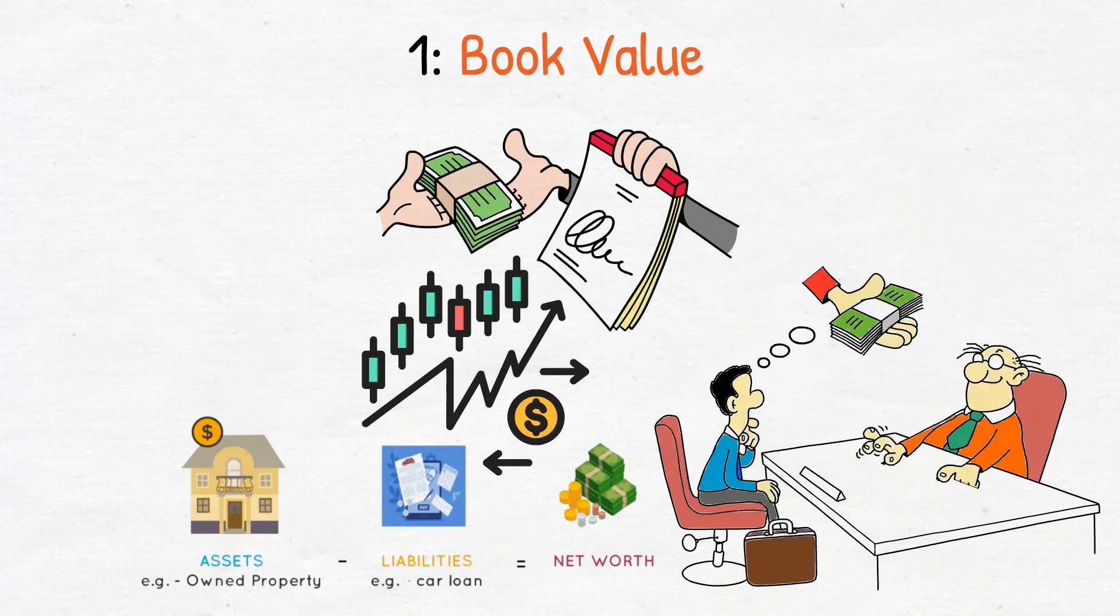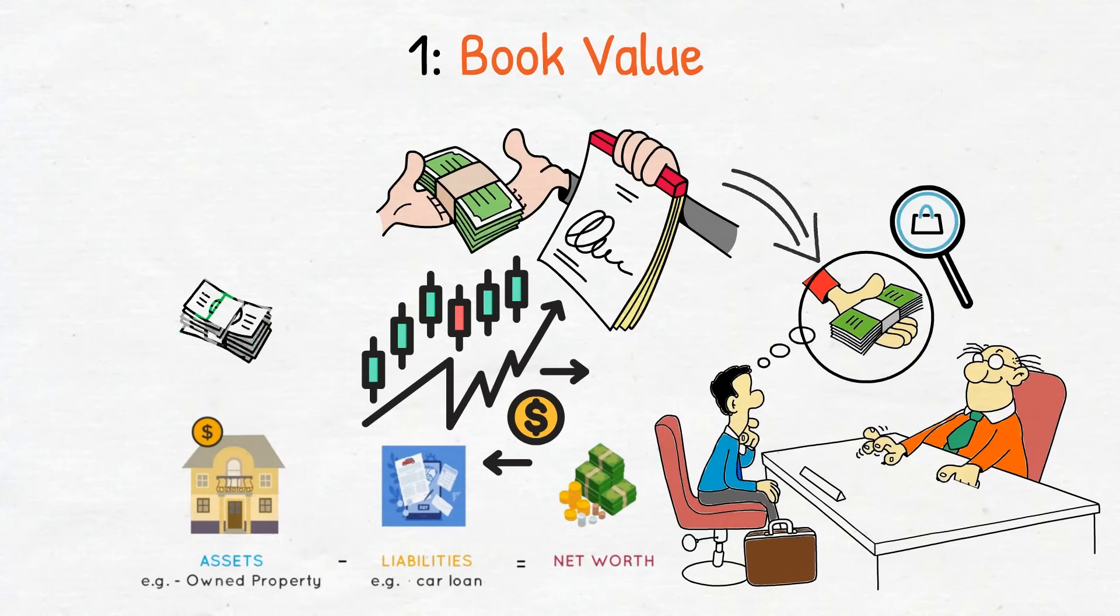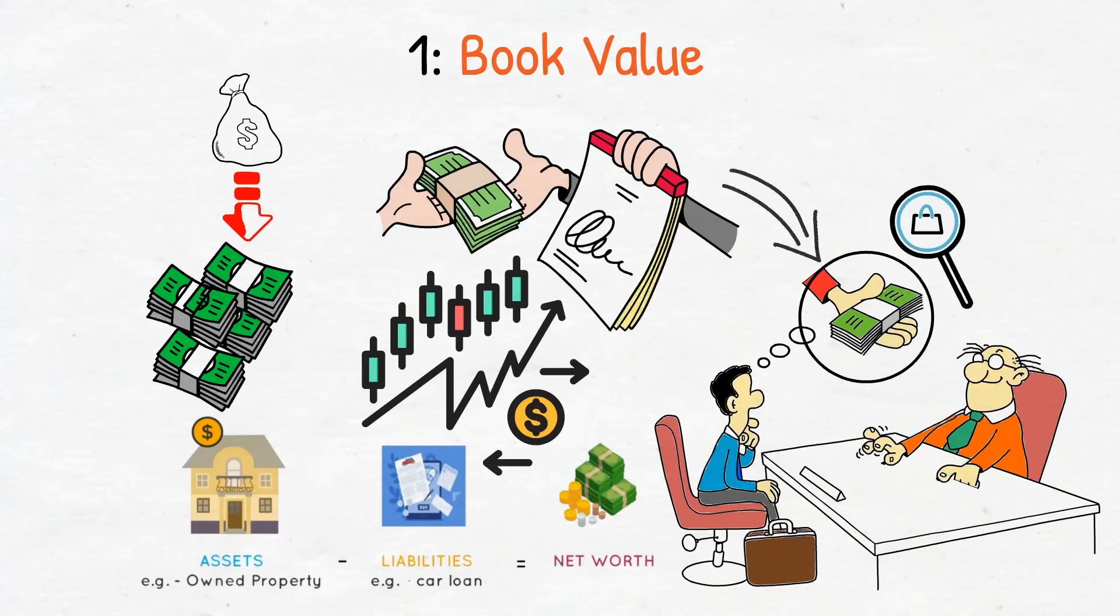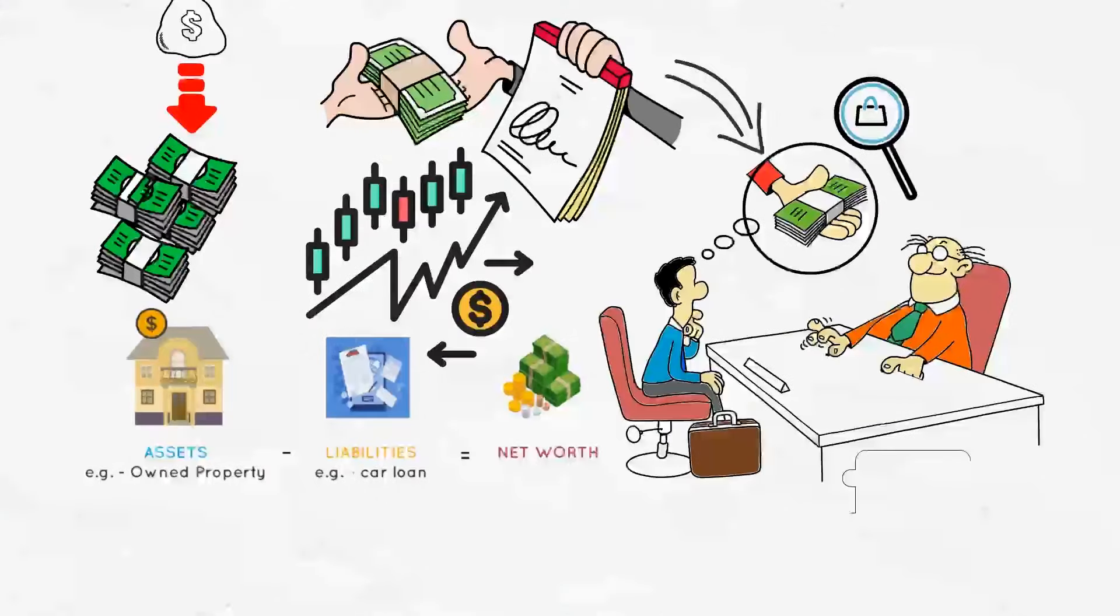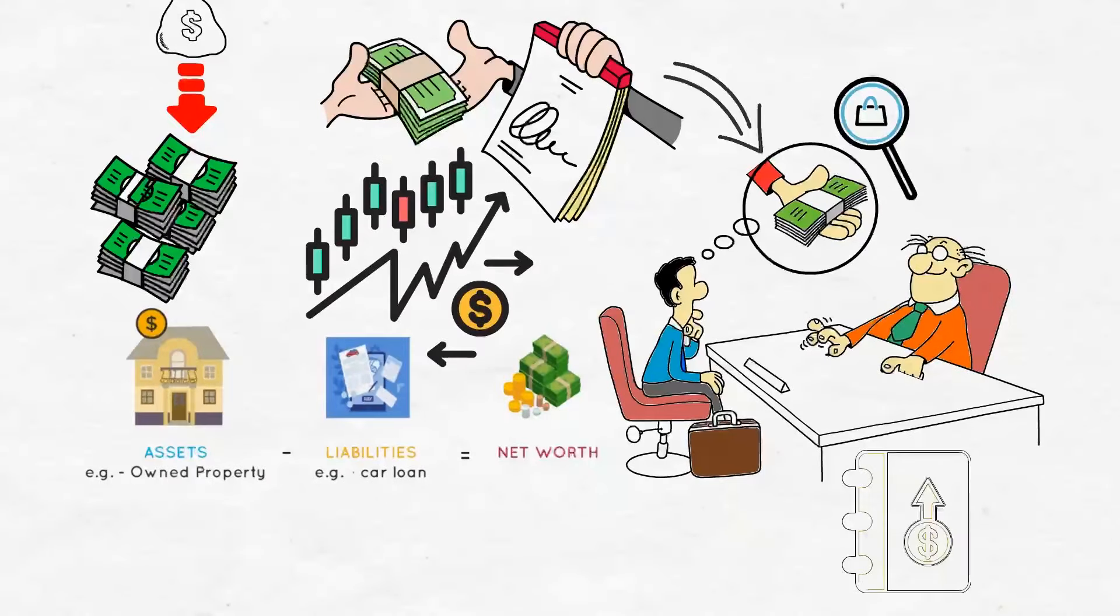The investor does not need to make any computations because the stock's book value amount is usually published along with other key ratios on the company's stock. When choosing stocks to buy, many investors search for stocks whose book value exceeds their current market price. If the company is dissolved or broken up and sold in separate pieces, these investors feel that their share of the proceeds will exceed the total paid for the stock. Also, suppose it is believed that the high book value of the stock will attract takeover attempts.